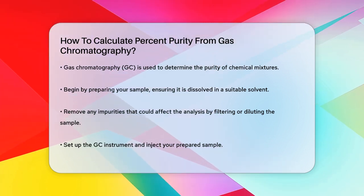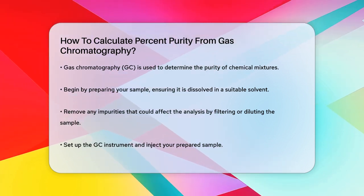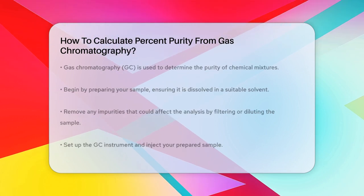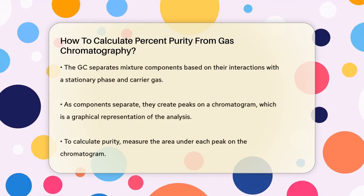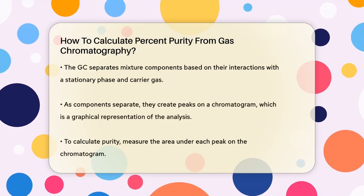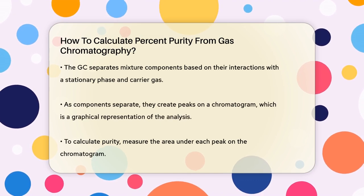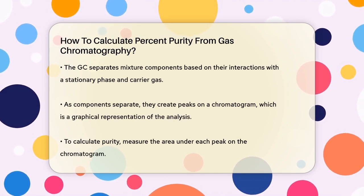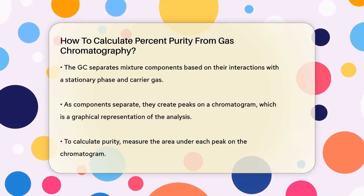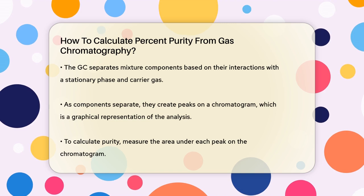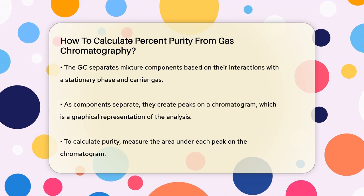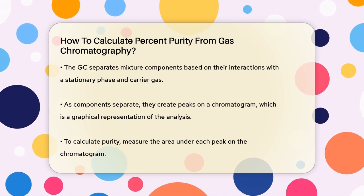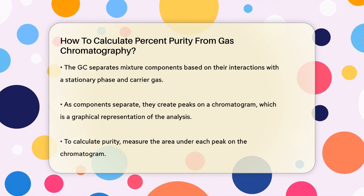Next, you set up your GC instrument and inject the sample into it. The GC works by separating the components of your mixture based on how they interact with a stationary phase and a carrier gas, like helium or nitrogen. The components will separate and come out at different times, creating peaks on a chromatogram.